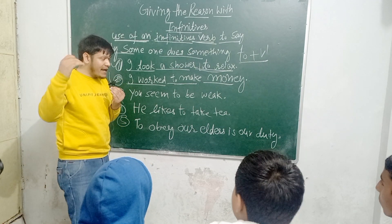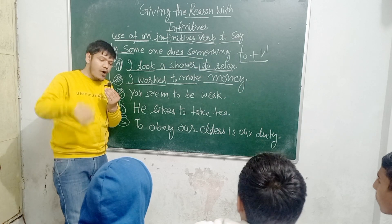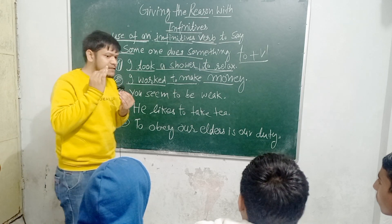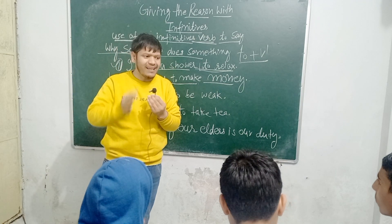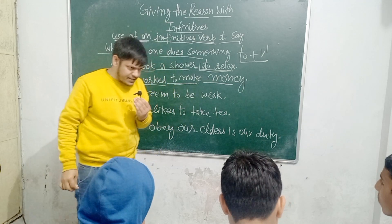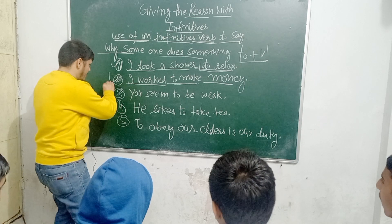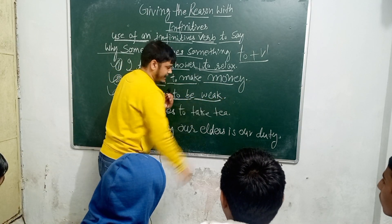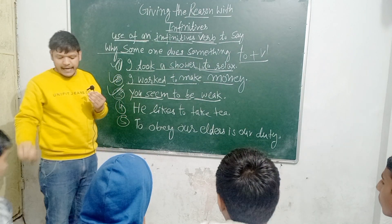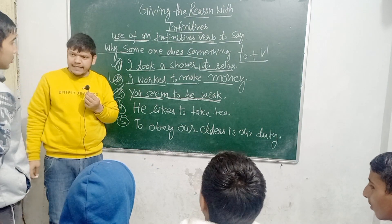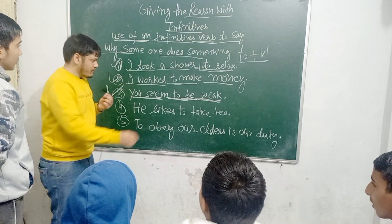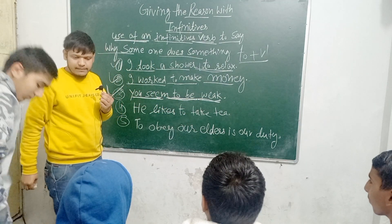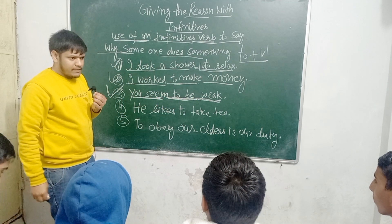We should have the ability to identify which word is used as an infinitive verb in a particular sentence. For example, number three: 'You seem to be big.' Which one is the infinitive verb here? To be. Sit down.